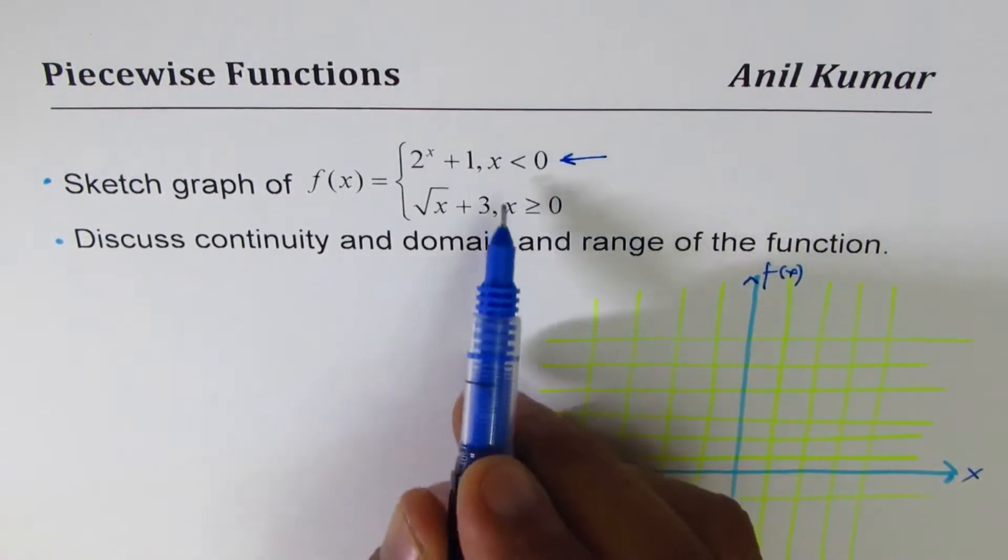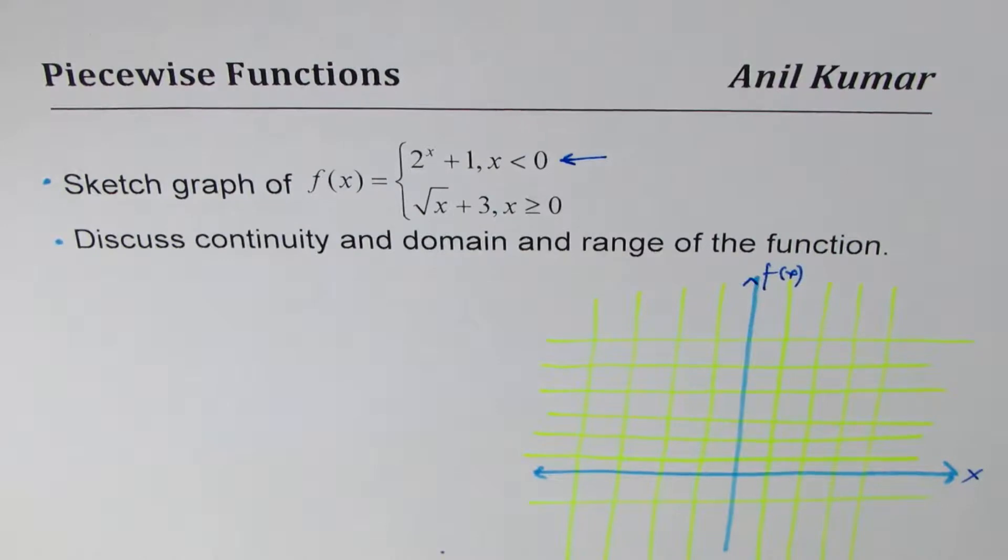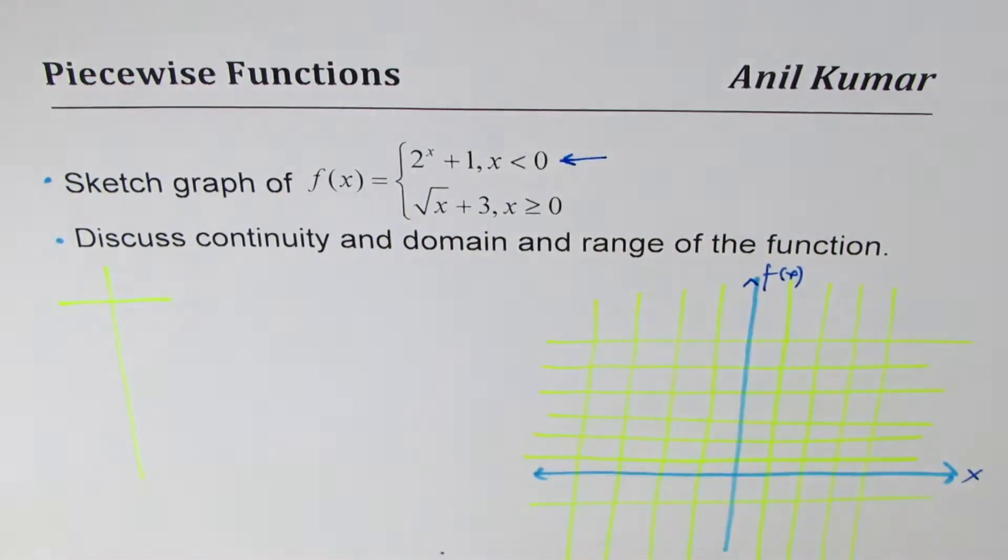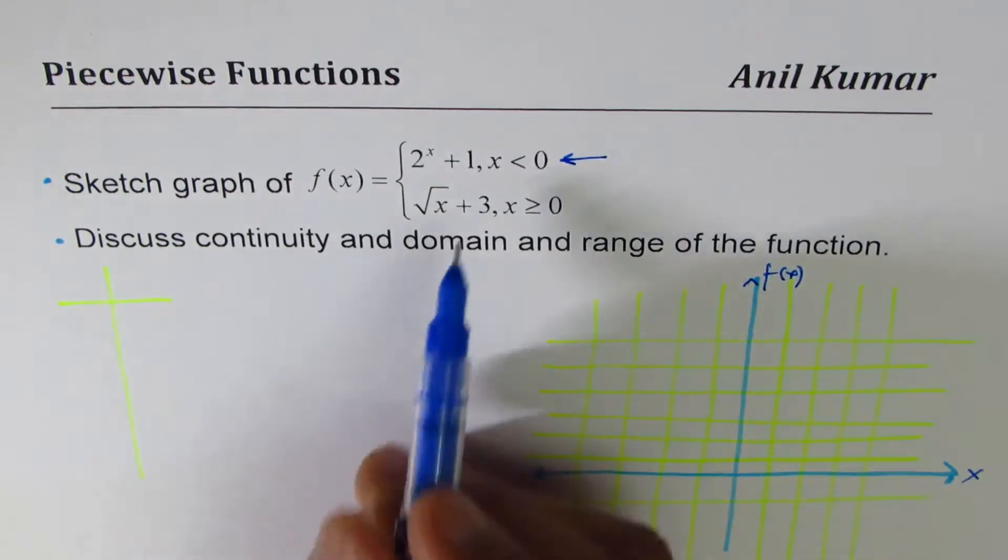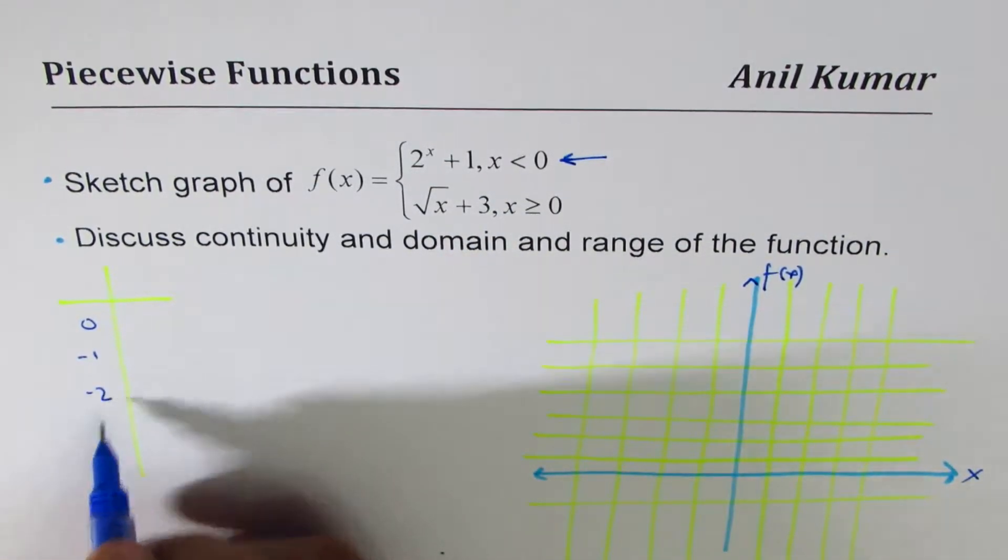2 to the power of x plus 1. So what you could do is you can make a table of values. This is better, or you can use transformations. Take values less than 0, let's say 0, minus 1, minus 2, and so on.